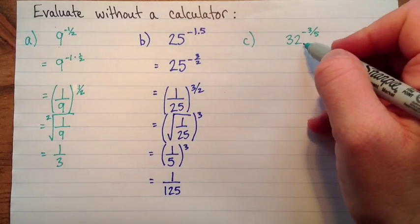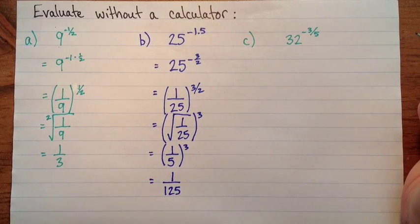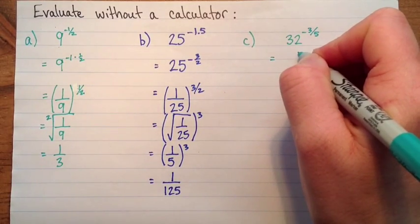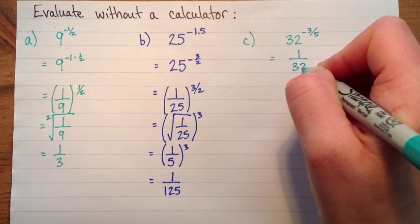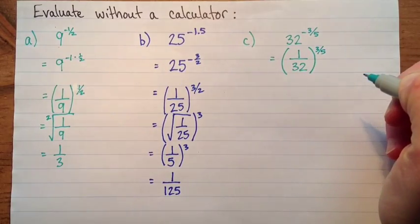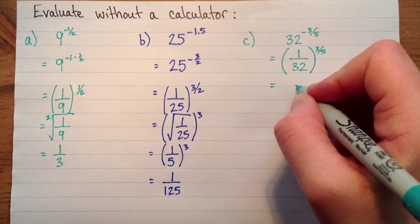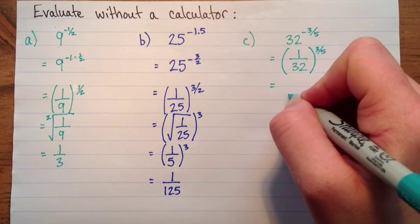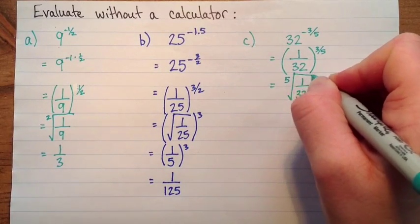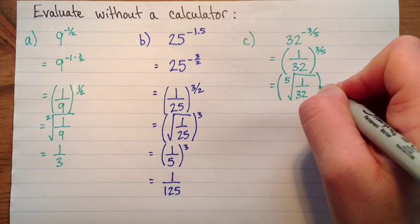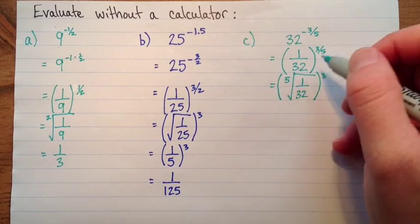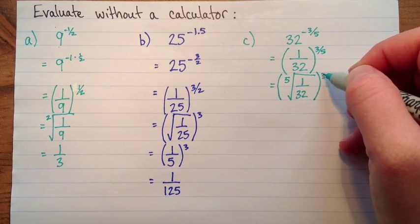In the next one, we have 32 to the exponent negative three over five. So that will give us, if I do the negative part first, we've got one over thirty-two to the exponent three-fifths. And then I'll rewrite my fractional exponent as a radical. So it's the fifth root of one over thirty-two cubed. So the numerator went down to the radical, to be the index of the radical, and the denominator is still an exponent.